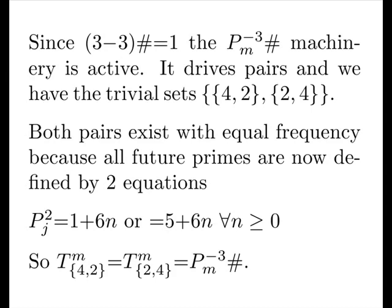A member can be one plus six N or five plus six N. And our type count at M for either pair is the third minor primordial at M.